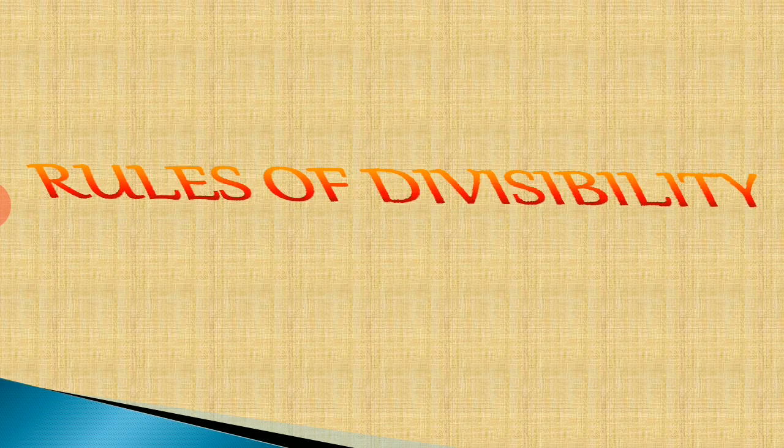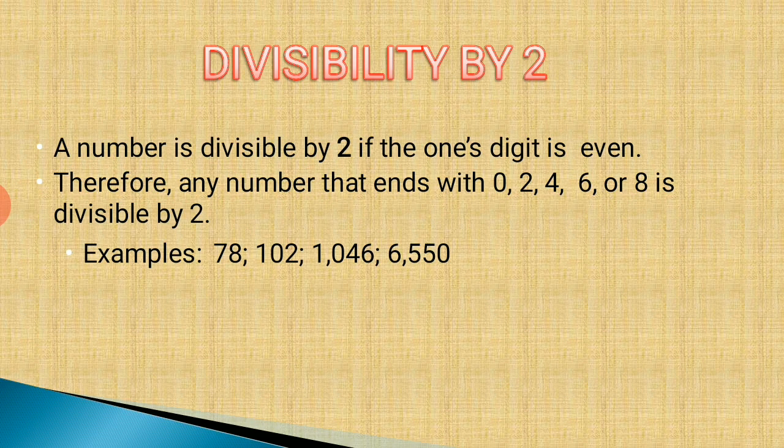Next are the rules of divisibility. Now we will understand the various rules of divisibility. First, the divisibility rule of 2: a number is divisible by 2 if the ones digit is even, that means it should end with 0, 2, 4, 6, or 8. Examples: 78, 102, 146, 6550.